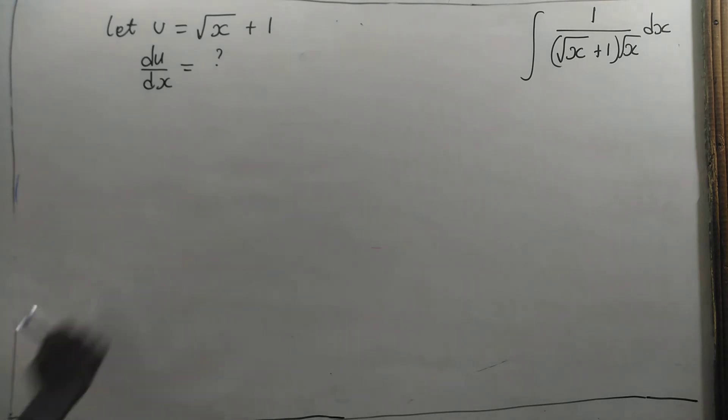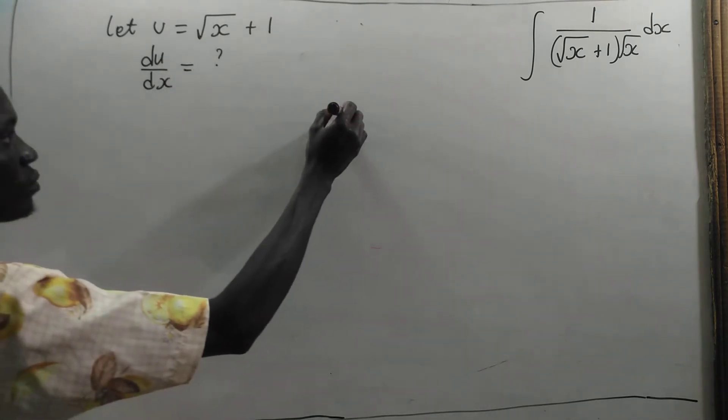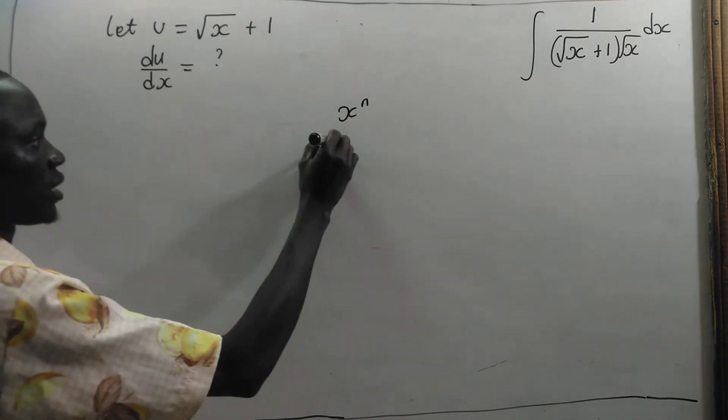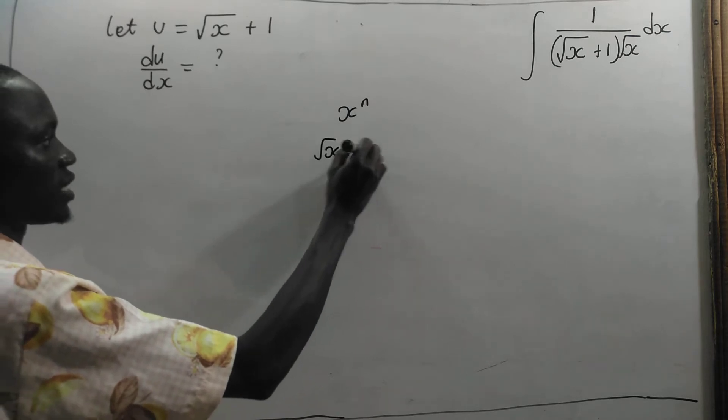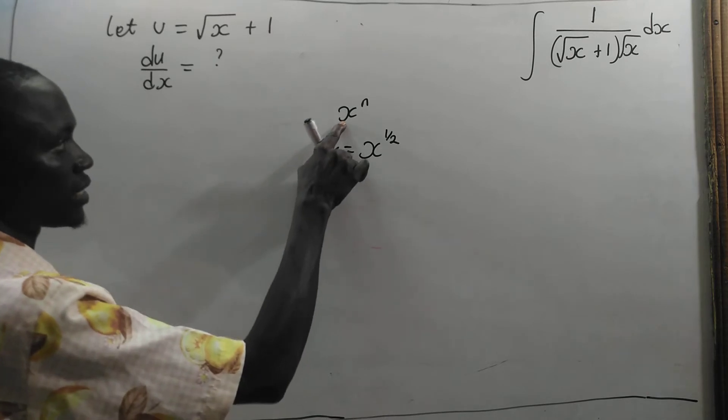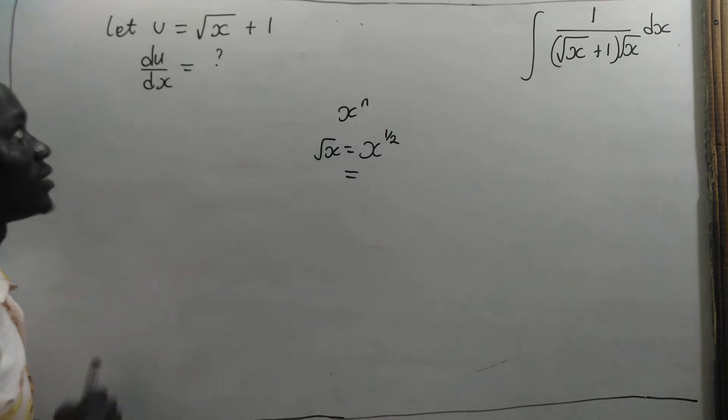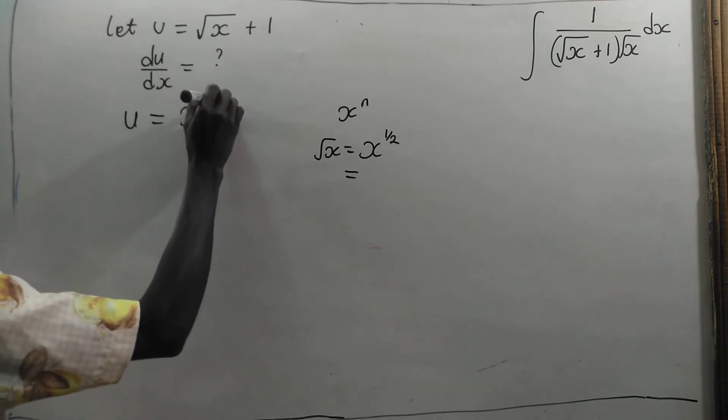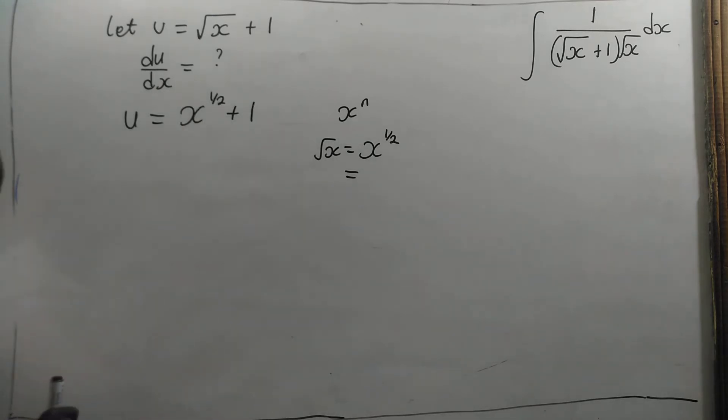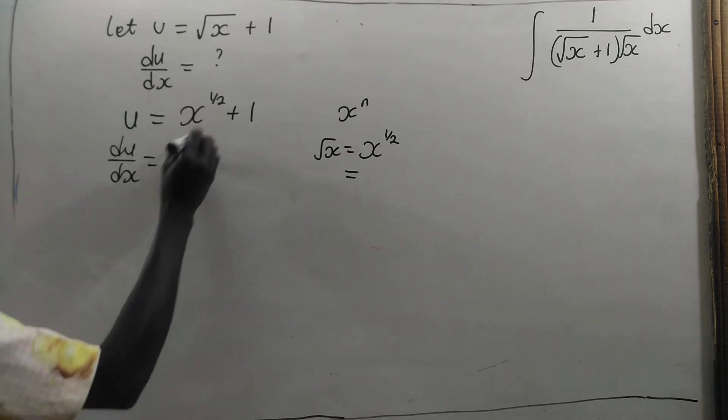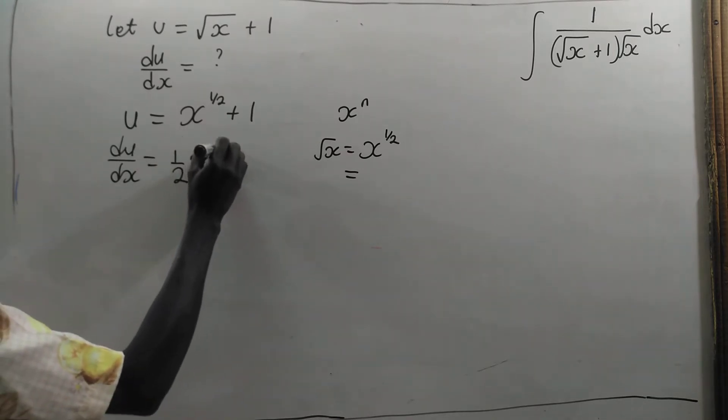First we have to put root x to the form x to the power n. Root x is the same as x to the power half, and this is the same as x to the power n. So we are going to have u to be equal to x to the power half plus 1. Now we can use the differentiation. The derivative of u with respect to x is equal to half of x to the power negative 1 out of 2.